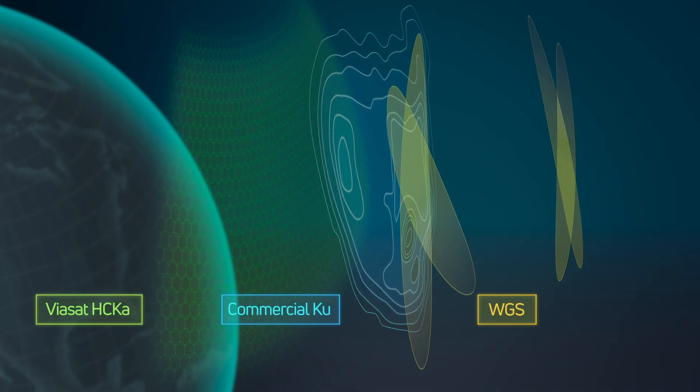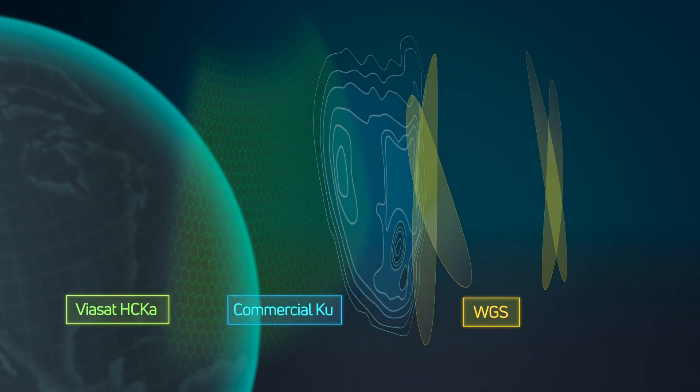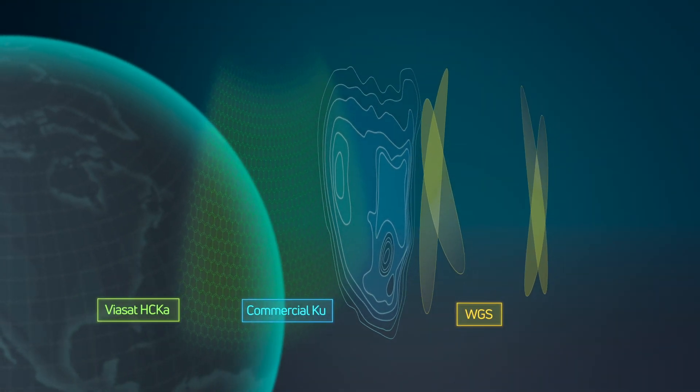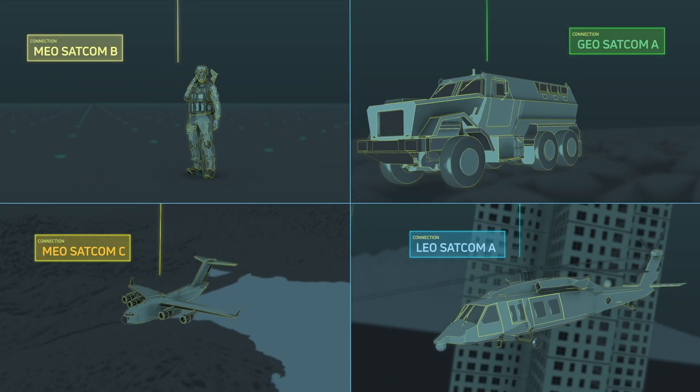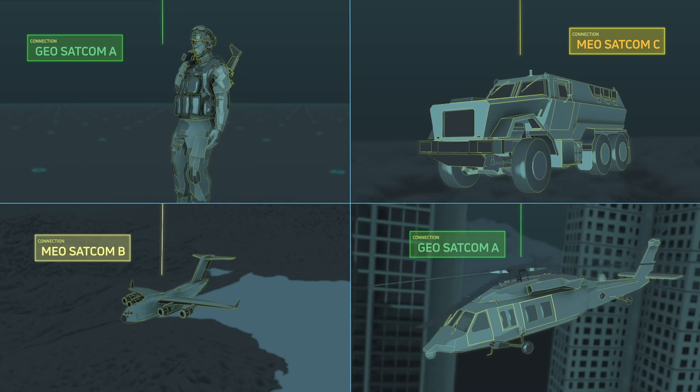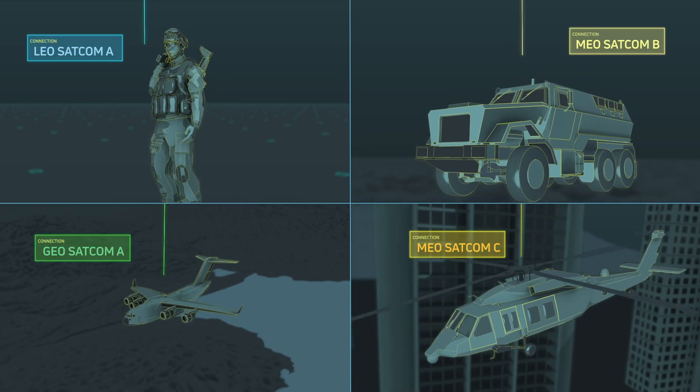By layering together many communications networks into a network of networks, the HAN allows automated intelligent routing and rerouting of warfighter communications, adding vital fault tolerance for all mission requirements through unprecedented network flexibility and resilience.